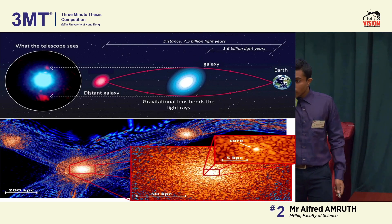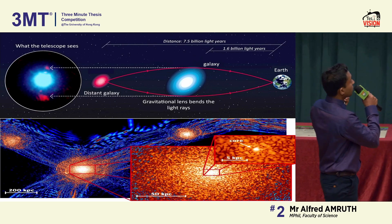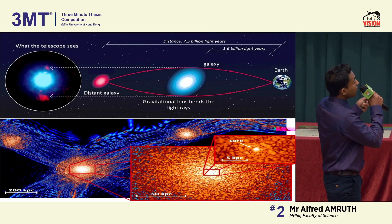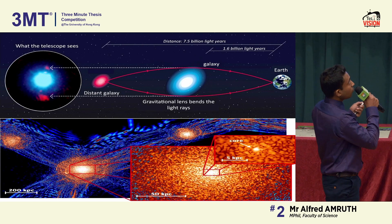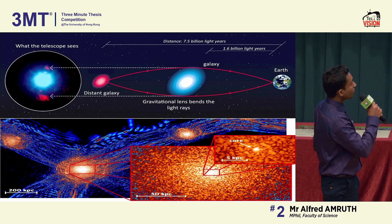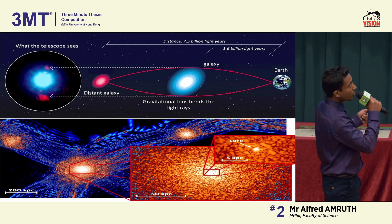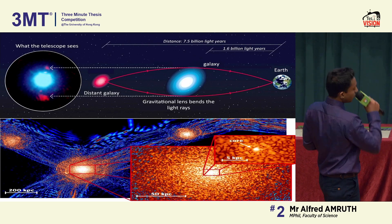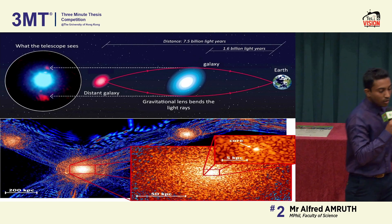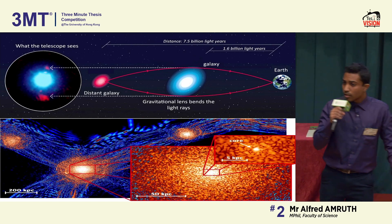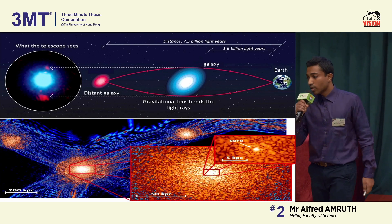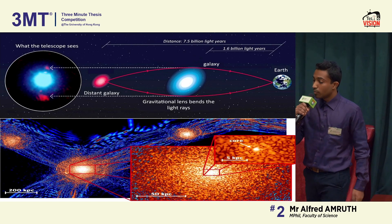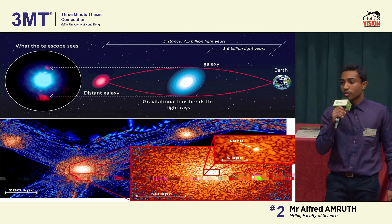Imagine you were looking at two galaxies through a telescope. The mass in the blue galaxy would bend the light from the red galaxy. If you traced back the path of the light rays, you would see the red galaxy in these positions. The problem is, conventional dark matter models cannot explain the brightness or position of these images.